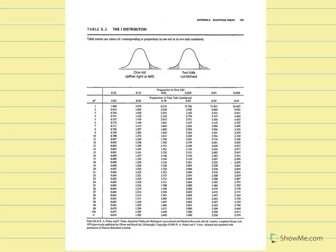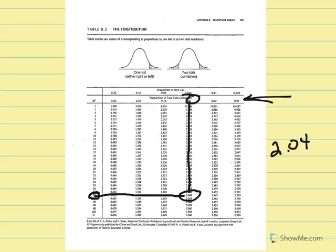In our t-distribution table with degrees of freedom equal to 28 and a two-tailed test at 5%, we find where those two values intersect and get a critical t equal to plus or minus 2.048.